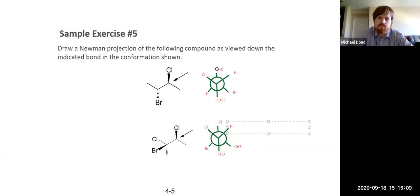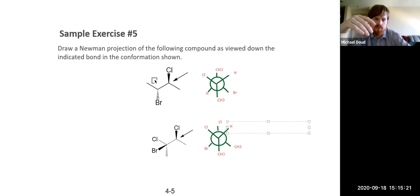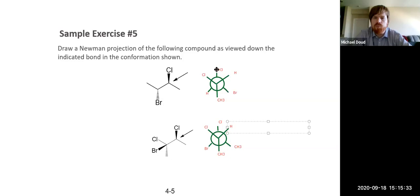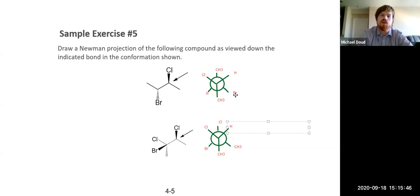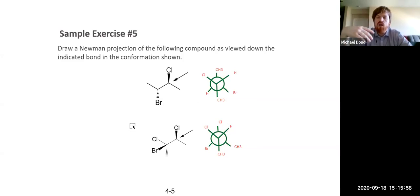The back carbon (carbon three) has a methyl group, a bromine, and a hydrogen. The methyl group is pointing straight up — it's in the plane of the paper — so it goes straight up for the back carbon. The bromine is pointing into the plane of the paper, so as we go around, the bromine appears to our right — bottom right. That leaves one spot for the hydrogen, which points towards us as we look at the screen, going to the left. I really recommend building these models — we're about to start rotating things, and it gets complicated.